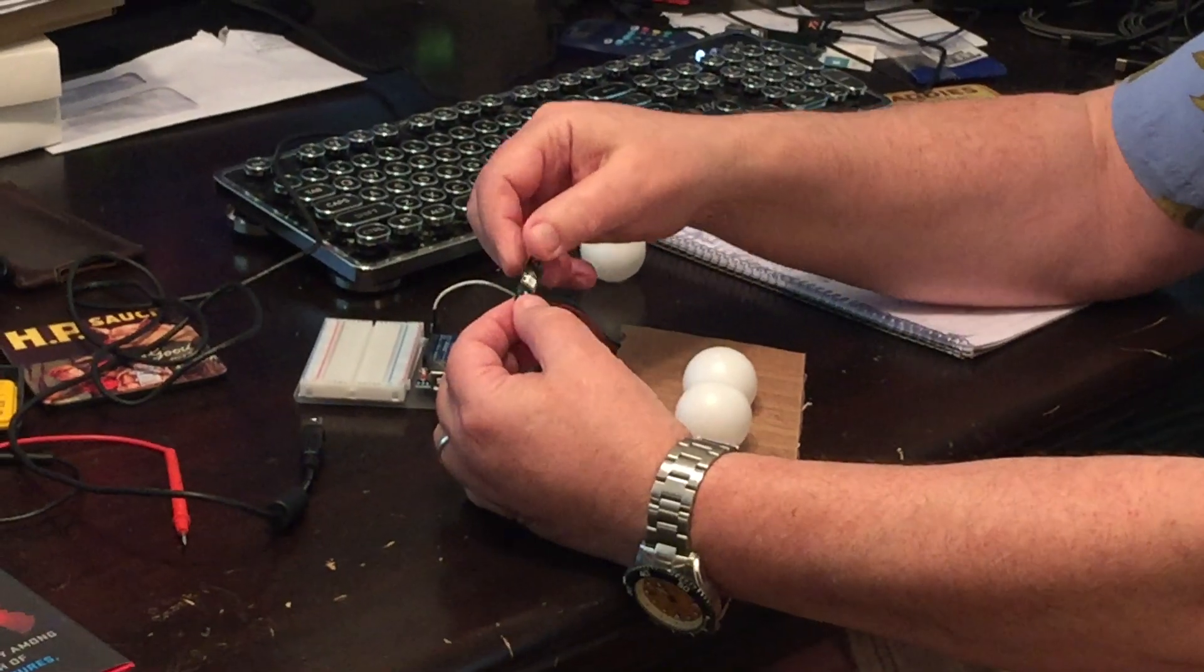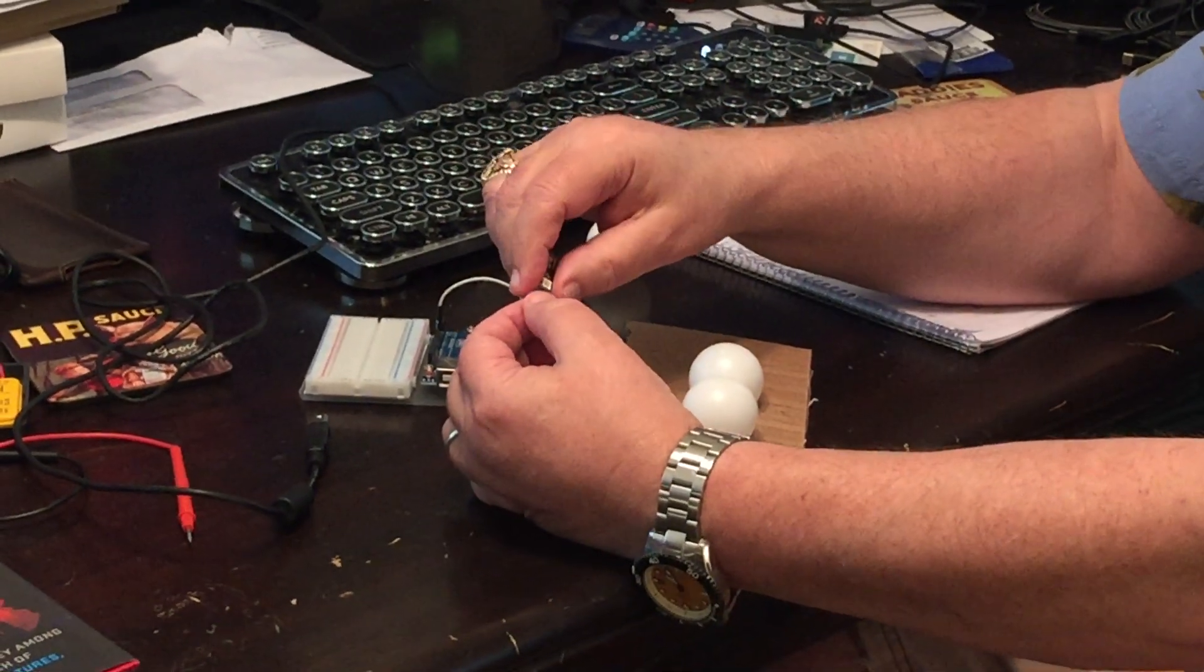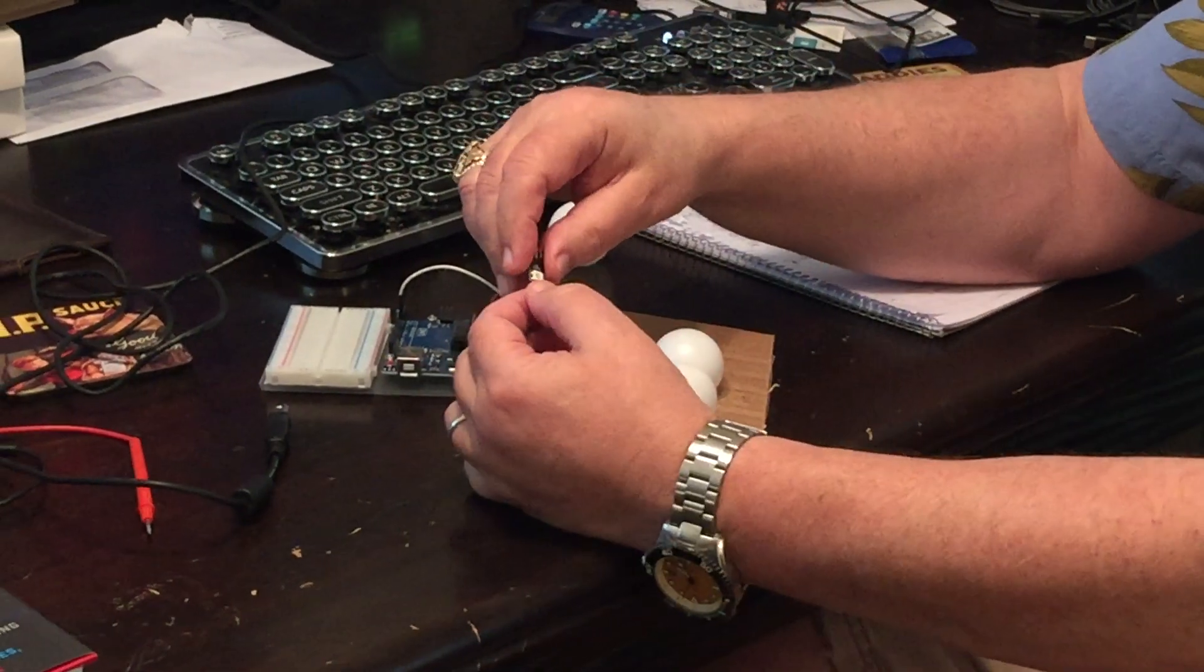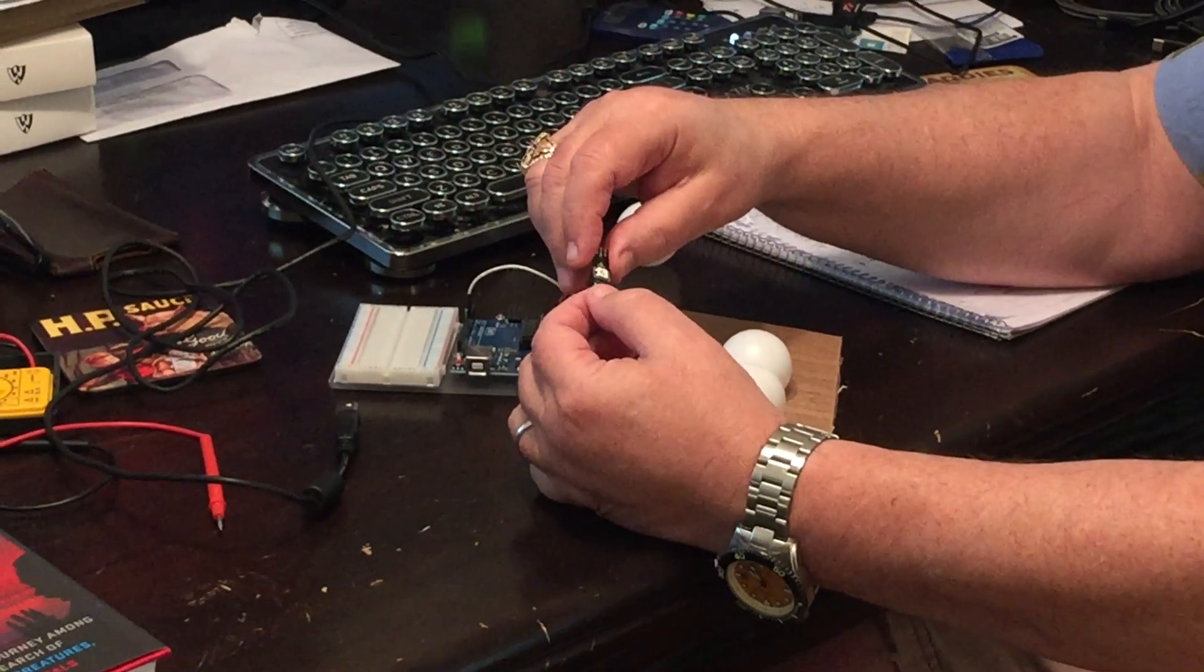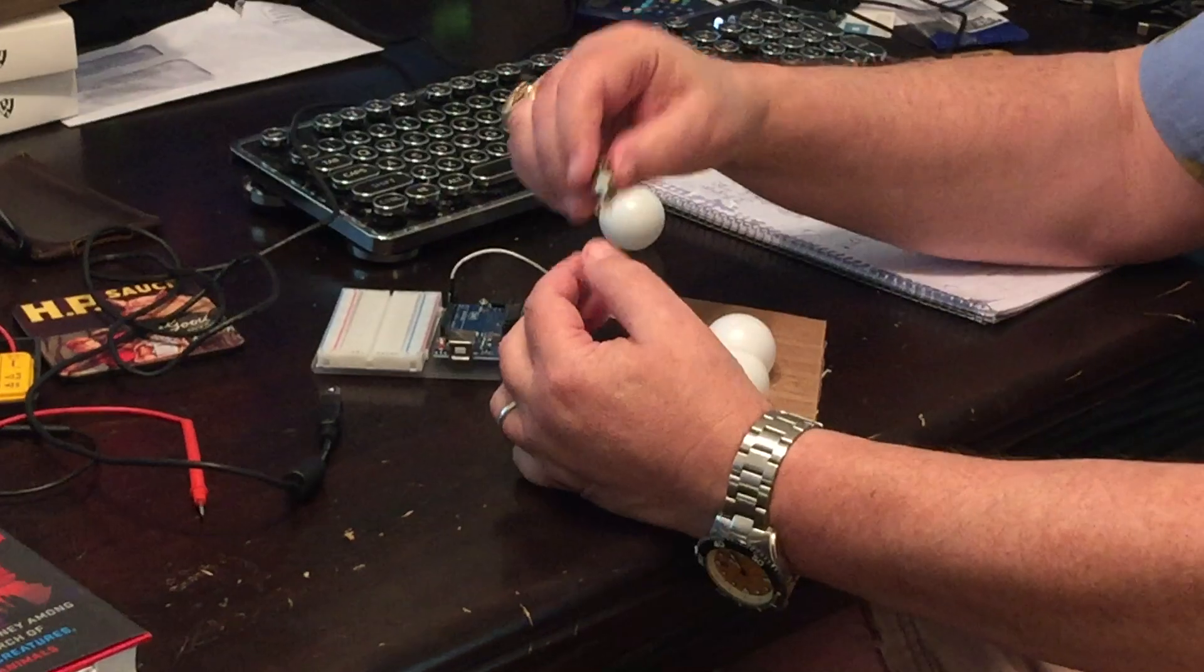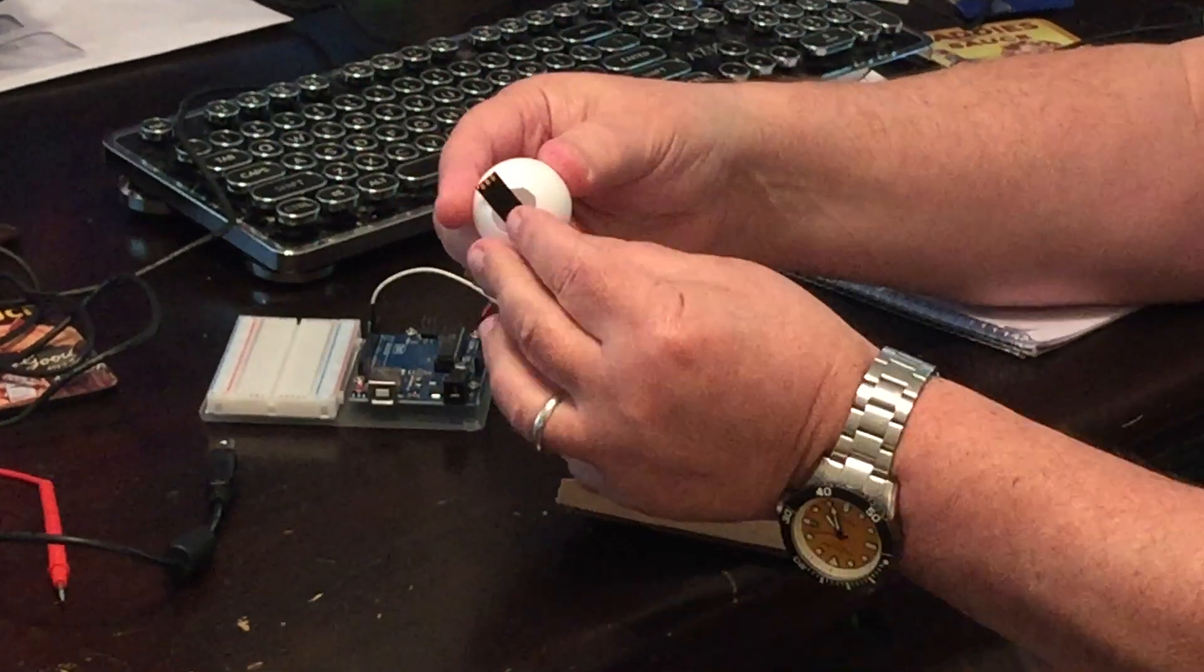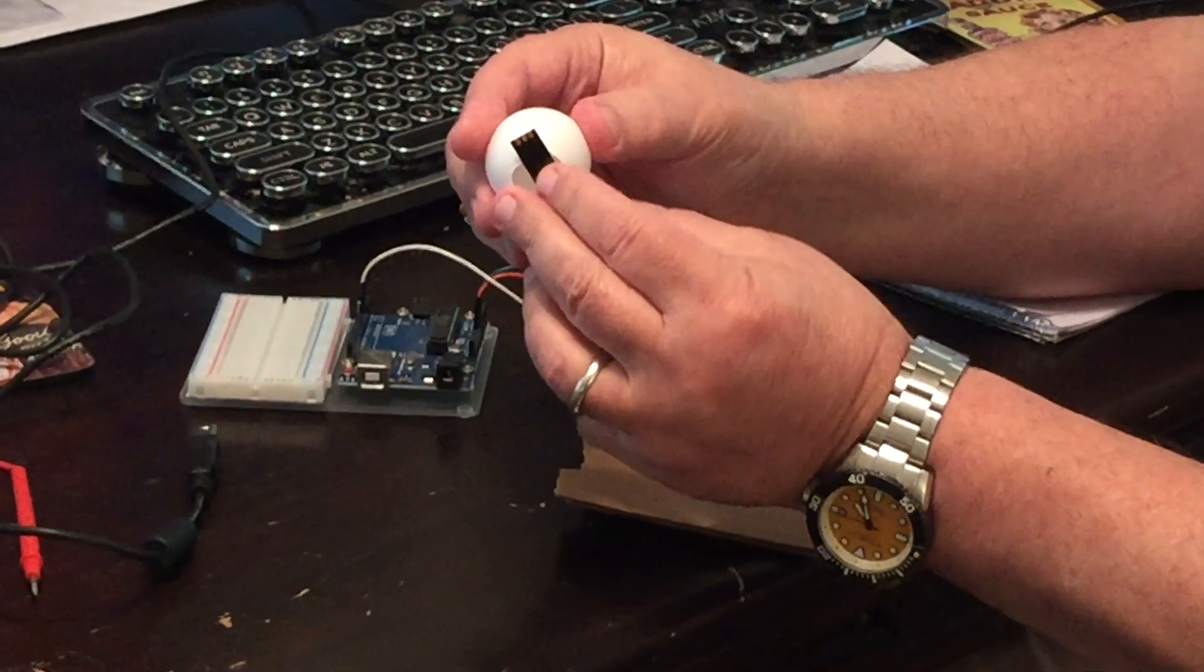What I'm doing is building a 12x12 array of ping pong balls. This is just two test ones. Each one is going to have its own Neopixel. So there are two ways to mount these. One is that you can take a ping pong ball and cut a hole in it and mount the Neopixel inside the ball.